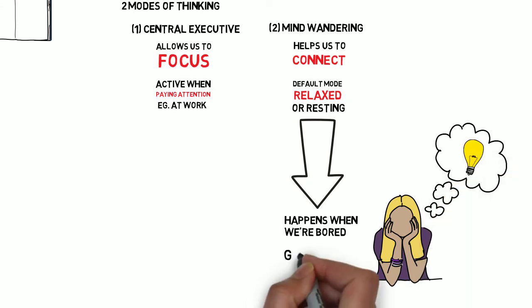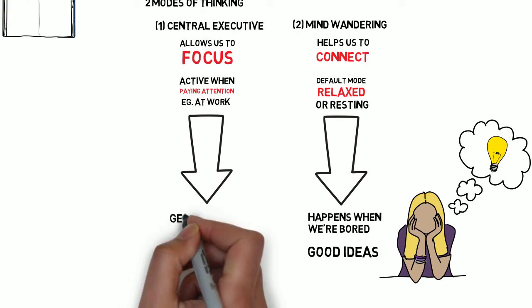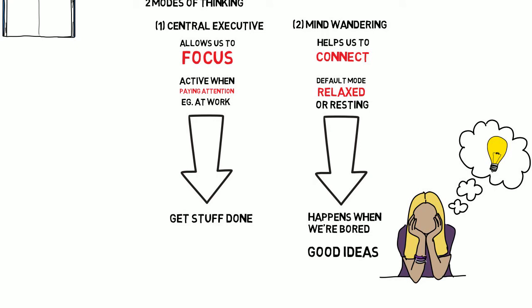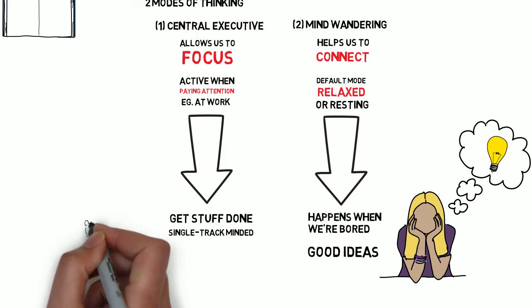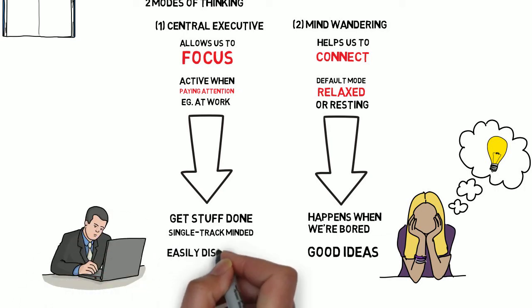The central executive system, on the other hand, is very linear in its thinking. It's all about getting things done and it's very single-track minded. Unfortunately, it's also the part of the brain that gets easily distracted because it's a sucker for novelty. It loves the sound of a text coming in or an email popping up, and it wants to find out what's going on, what's happening.